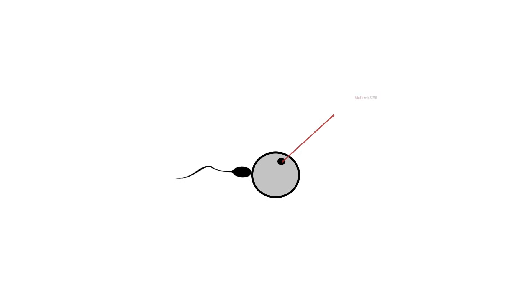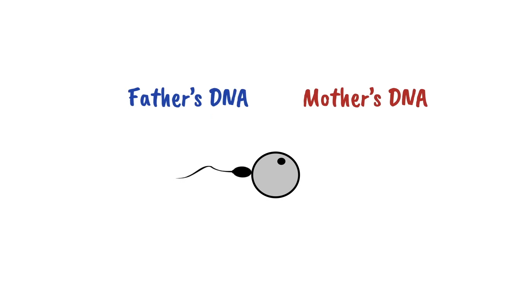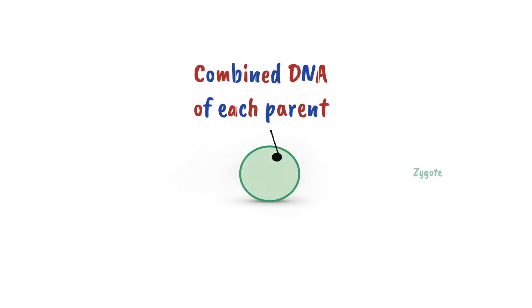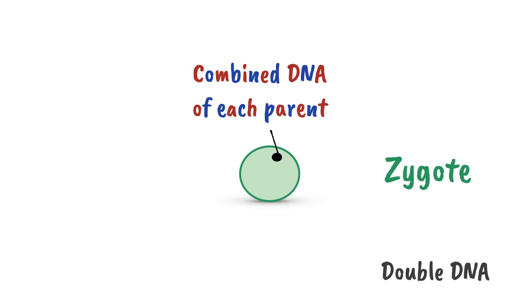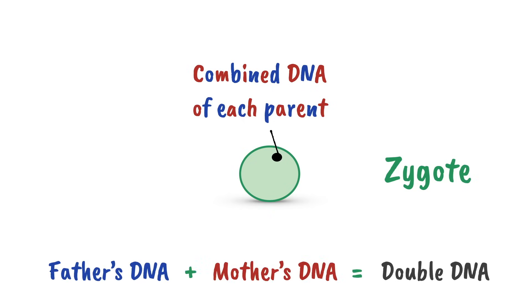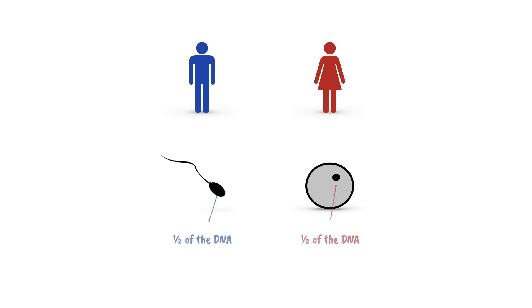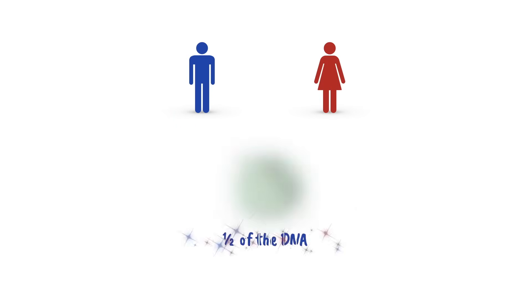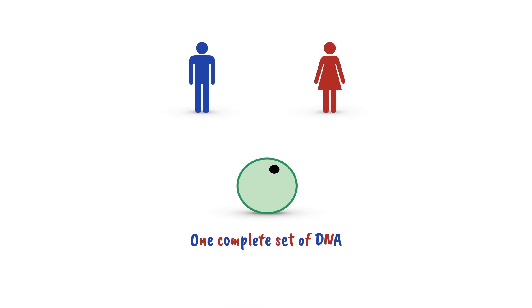When these DNA-containing gametes fuse during fertilization, the DNA of each parent is combined in the zygote. You may think that this would result in the offspring having double the amount of DNA, because they now have their father's DNA plus their mother's DNA. But that's not correct. In fact, in order for the new organism to have the correct amount of DNA, each gamete contains a random half of the DNA of the parent. When these two halves combine, they provide one complete set of DNA in the new cell, which then divides and develops into a new individual.